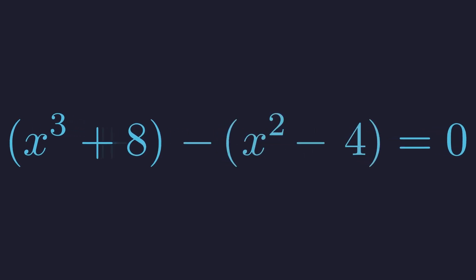And now the structure reveals itself: a sum of cubes and a difference of squares. Notice the parallel structure. Both groups have matching powers with the number 2: x cubed with 2 cubed, x squared with 2 squared. This symmetry is the key.